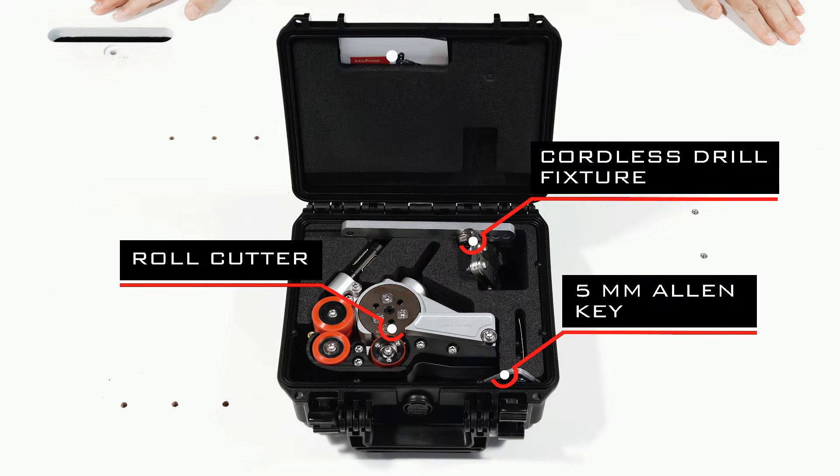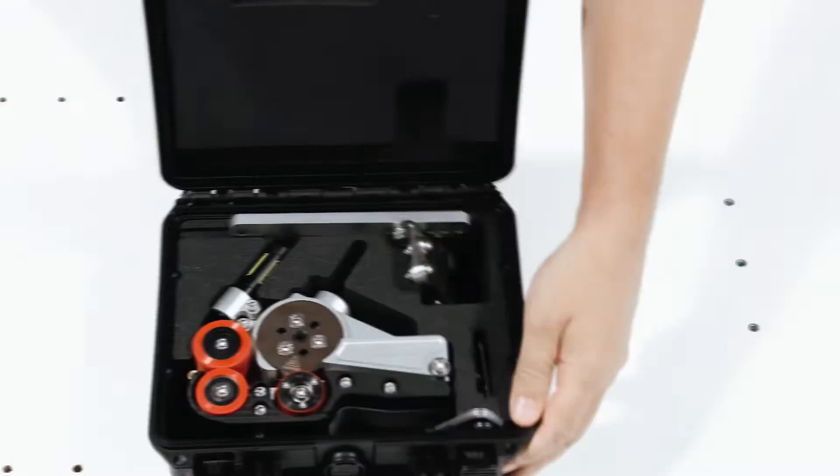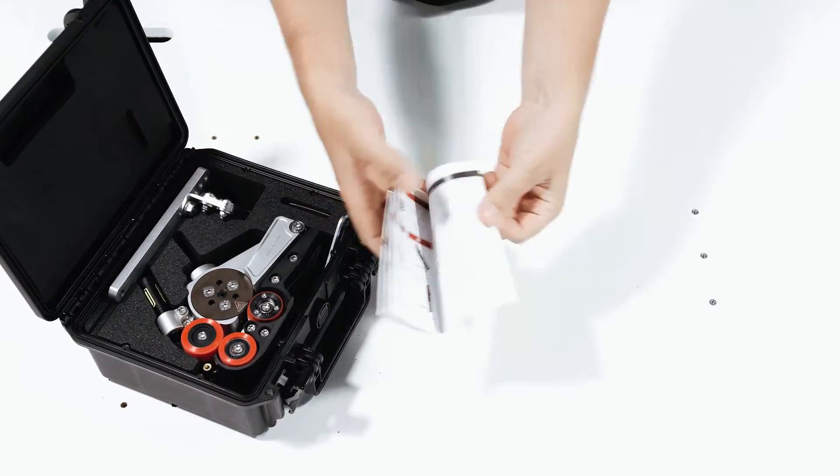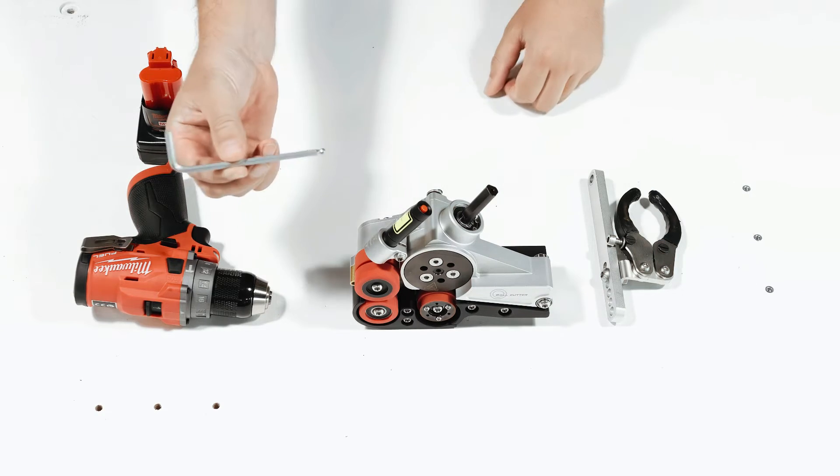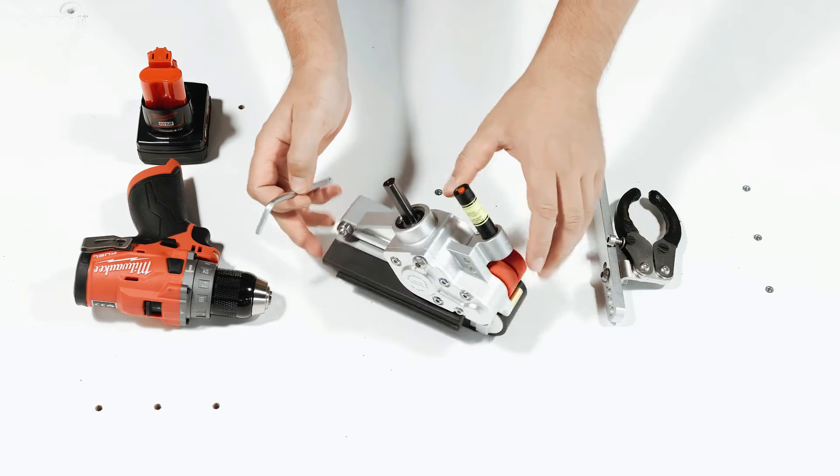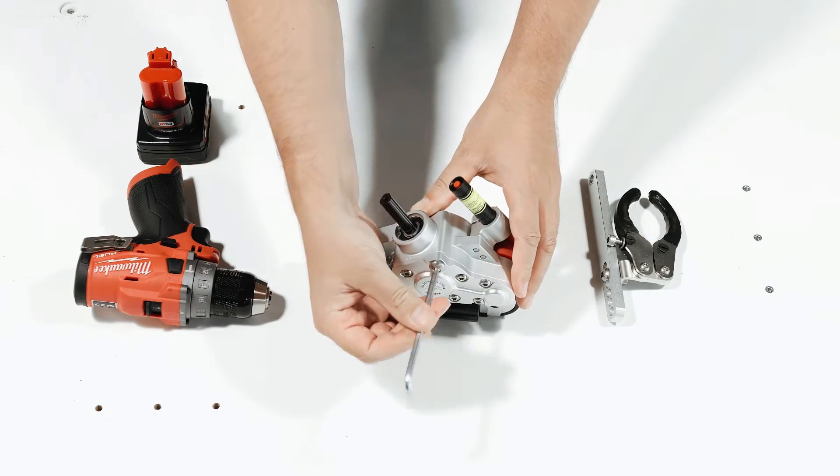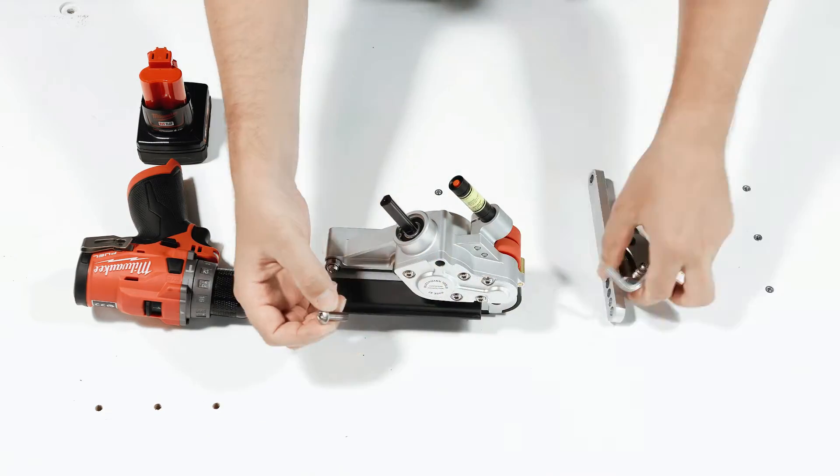Before using the roll cutter, always read the instruction manual. Follow these steps to mount the cordless drill fixture: use the included 5mm allen key to remove the M8 bolt on the side of the tool, then attach the fixture.